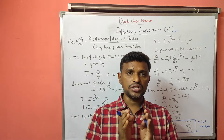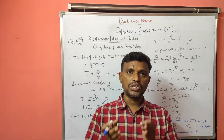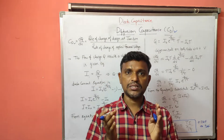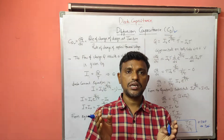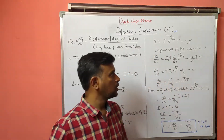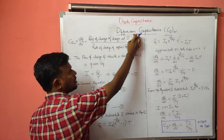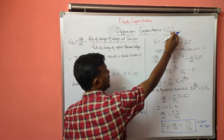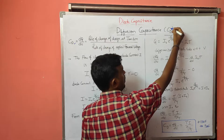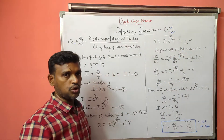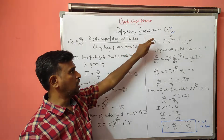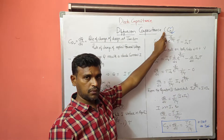The change in the charge in the PN junction diode with respect to the applied voltage is considered as the capacitive effect. This capacitance is called the diffusion capacitance, and it will be indicated with C suffix D, where C represents the capacitance and D represents the diffusion.